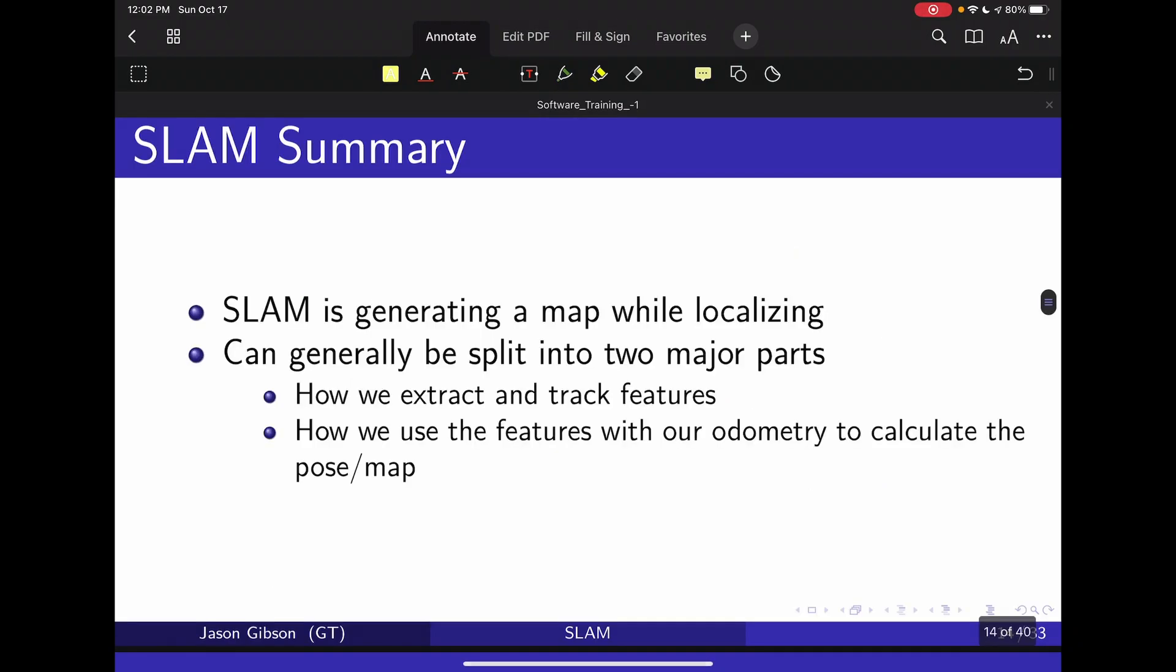So in summary, the idea of SLAM is generating a map while localizing. It is a chicken and the egg problem. You are trying to solve both at the same time when both problems rely on each other. Essentially you're looking at an incremental algorithm where you solve for a position, then for a map, then for a position, then for a map, back and forth, and you slowly refine your estimate over time. It can be split into two major parts. First, how we extract and track our features for landmark-based SLAM. And then also how can we use those features to constrain our odometry or our poses together to calculate a better estimate of our position or map. In the next videos, we'll talk about different representations of maps.